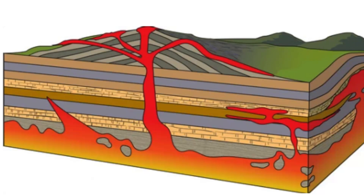What is a bathleth? A bathleth is a large, dome-shaped rock formation that is formed from a massive intrusion of magma into the Earth's crust. Bathleths are the largest and most intrusive type of plutonic rock formations.